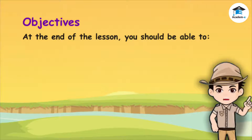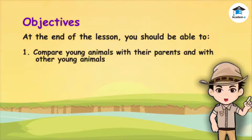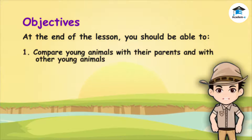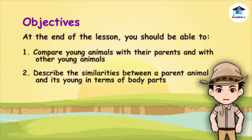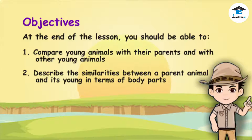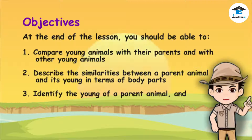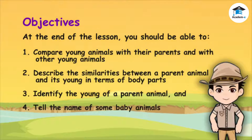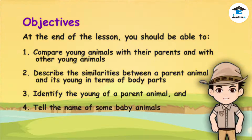Objectives. At the end of the lesson, you should be able to: 1. Compare young animals with their parents and with other young animals. 2. Describe the similarities between a parent animal and its young in terms of body parts. 3. Identify the young of a parent animal. 4. Tell the name of some baby animals.